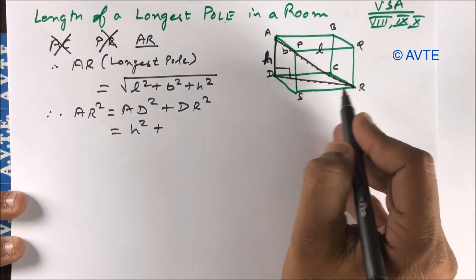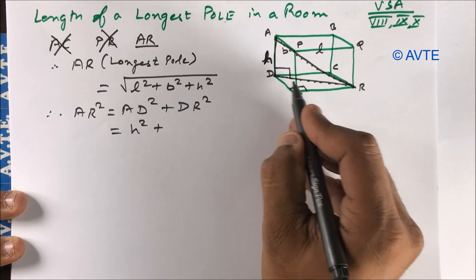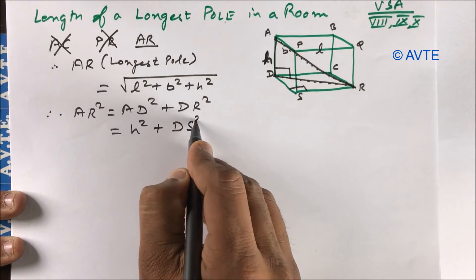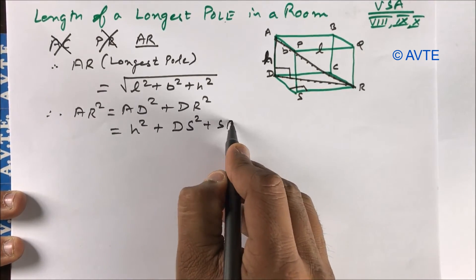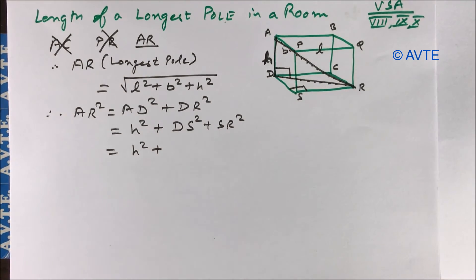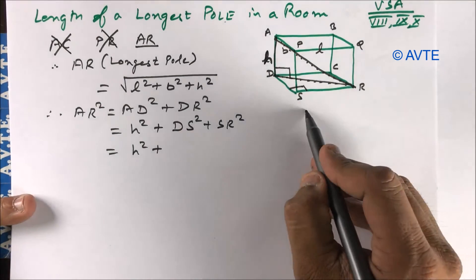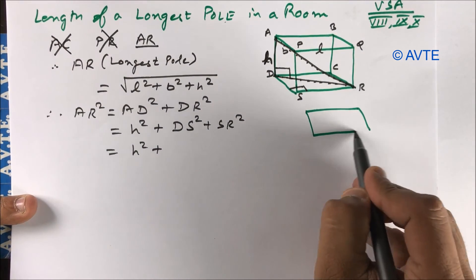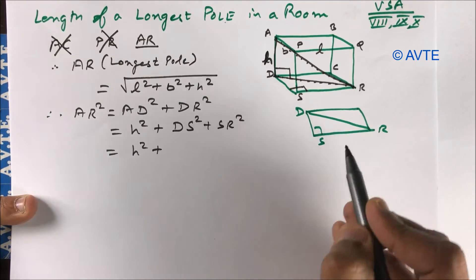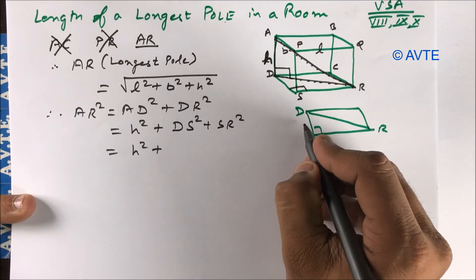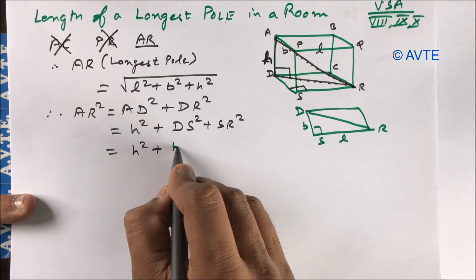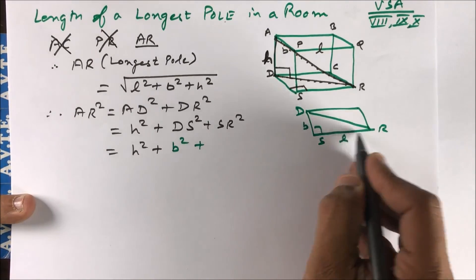But DR square is also diagonal of the floor. So which is DS square plus SR square. It means you are in this floor. In this floor DR, this is your base and this is your length. So DS is B square and SR is your L square.